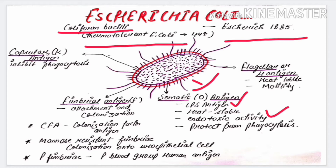Next is the flagellar H-antigen. It is heat labile and this antigen helps in the motility of the bacteria and also contributes to virulence. Next is the fimbrial antigen, which is the F-antigen. This antigen helps in the attachment and colonization of the bacteria.